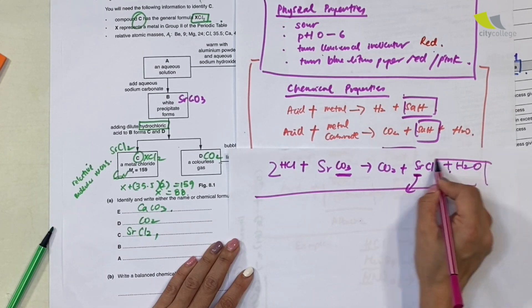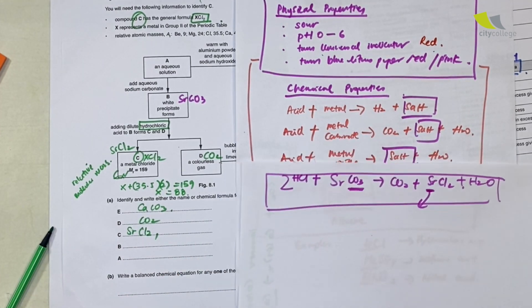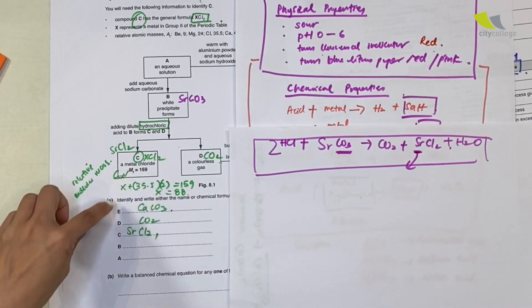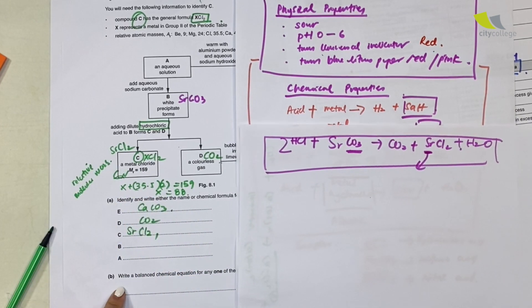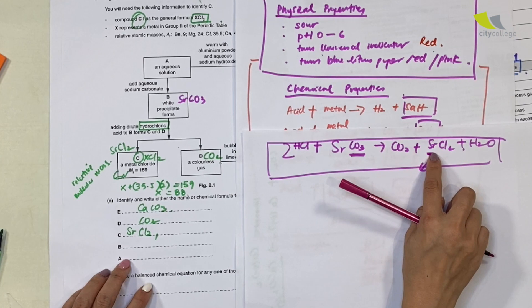Since I know that CO2 is present and the salt here is SrCl2, obviously if this is my SrCl2, in order to form Sr here, my carbonate here must be SrCO3. So I will know that this is SrCO3 because this is SrCl2. This must be SrCO3.